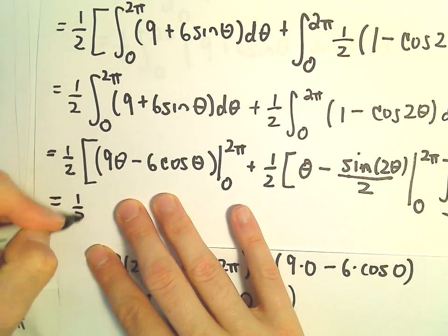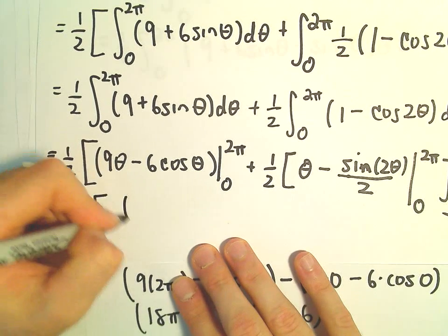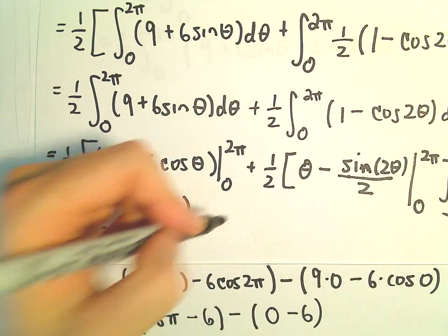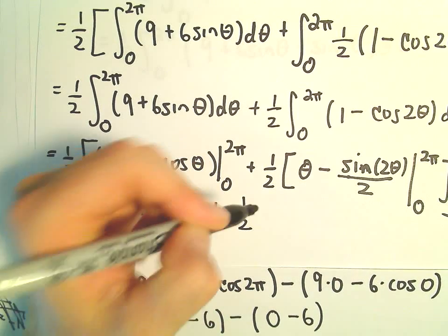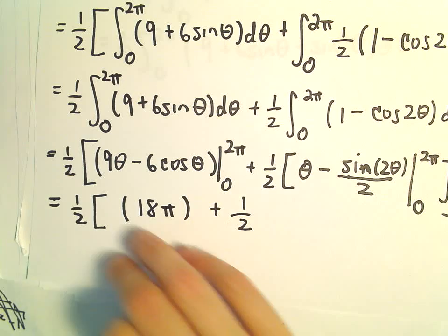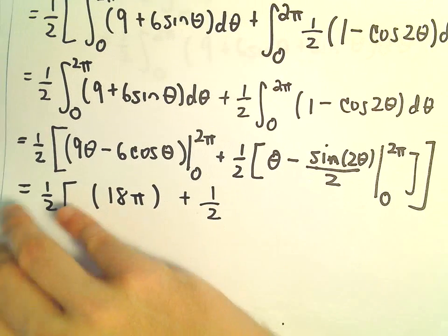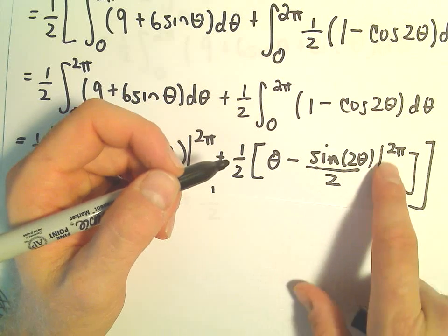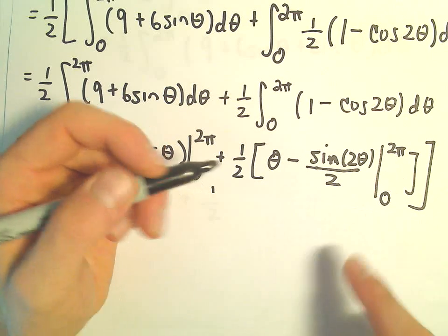So we've got 1 half. We said that all of this part is going to work out to be just 18 pi. Plus 1 half. And then I'm going to compute this other part separately as well.